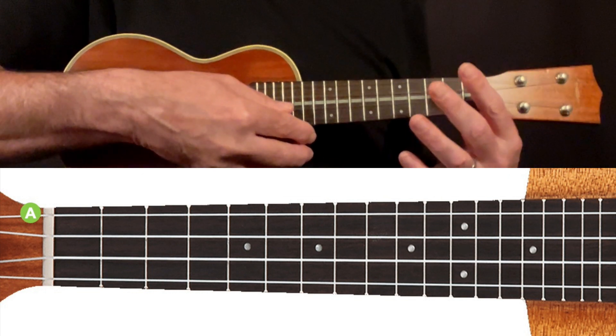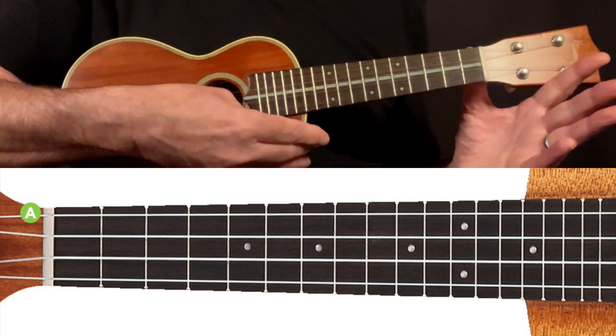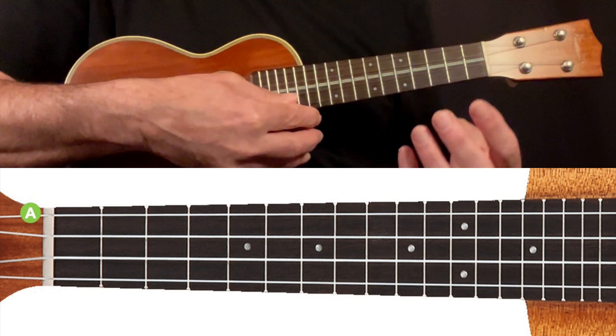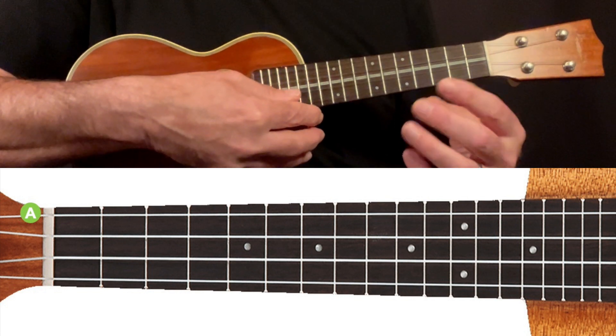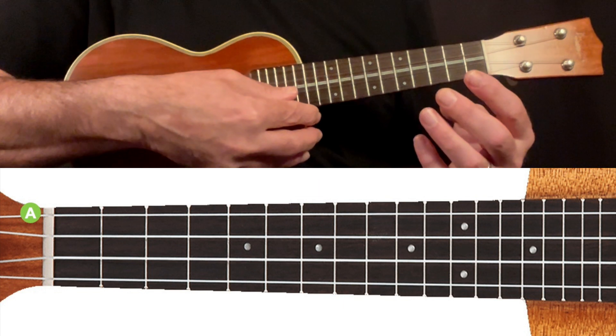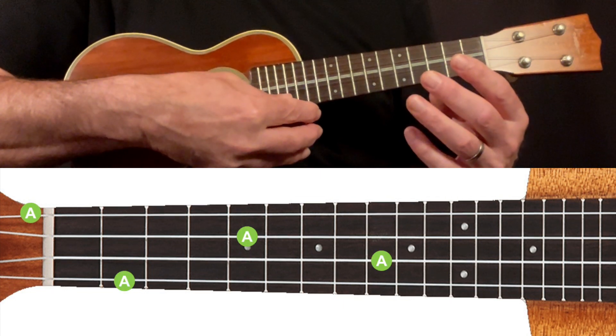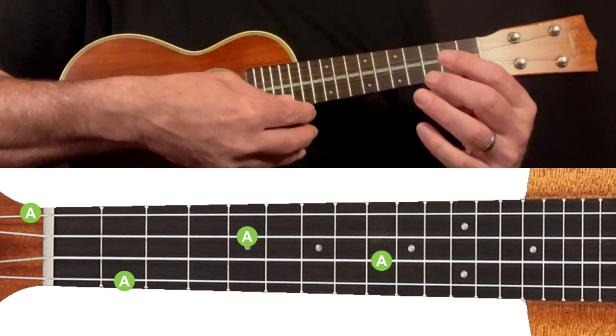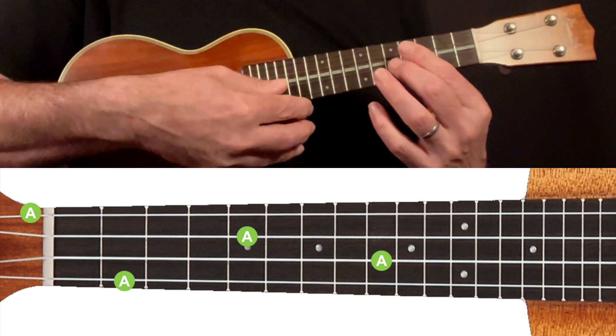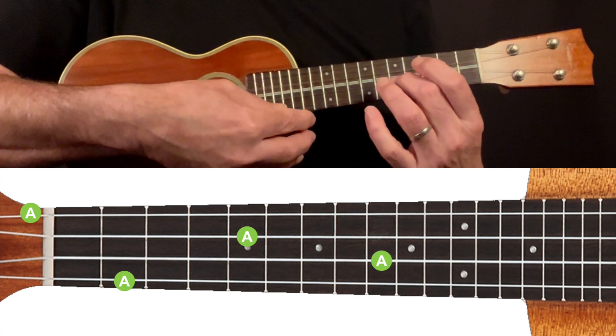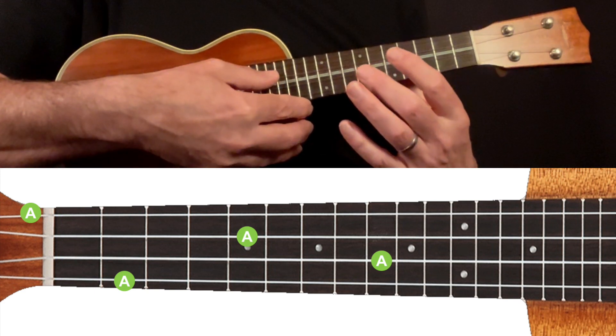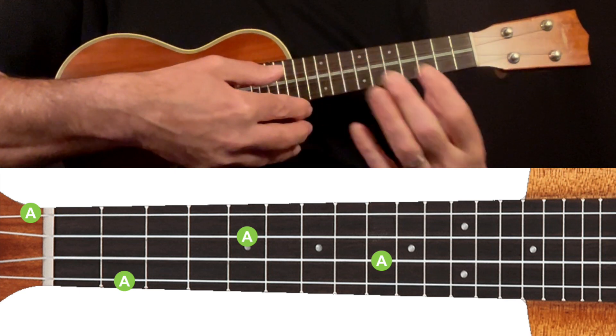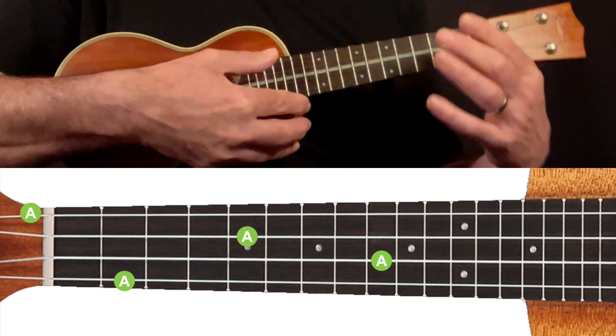If we play the string open without fretting it, we have an A note. It's worth noting at this point that we have the same A note as this one available to us on all four strings of our ukulele as per the diagram below. So the open string of the A string is the same note as if we were to fret the E string at the fifth fret, or the C string at the ninth fret, or the G string at the second fret.